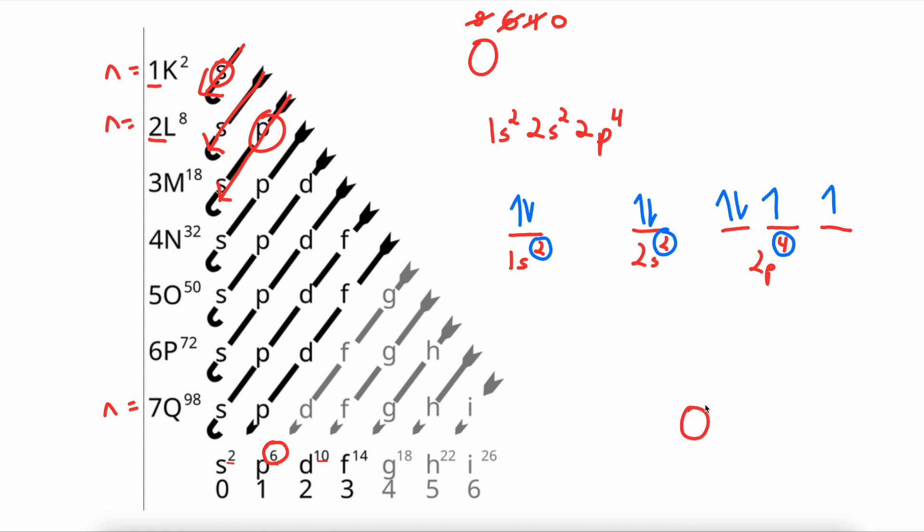We start by writing our element in the middle and we will now draw our energy levels. Because we go from n equals 1 all the way up to n equals 2, we need to draw 2 energy levels. I will use yellow for our electrons. The first energy level has 2 electrons in it. The second energy level has 2 plus 4 electrons in it. 6 total.